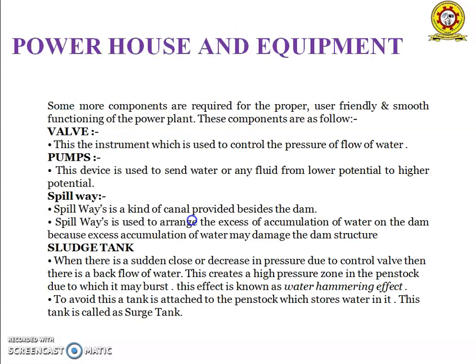Powerhouse equipment. Some more components are required for the proper, user-friendly, and smooth functioning of the power plant. These components are valves, pumps, spillways, and surge tanks. The first one is the valve, which is the instrument used to control the pressure of flow of water. There are different types of valves like U valve, V valve, butterfly valve, etc.